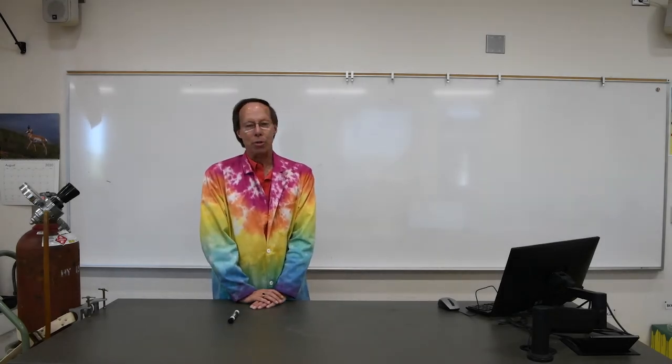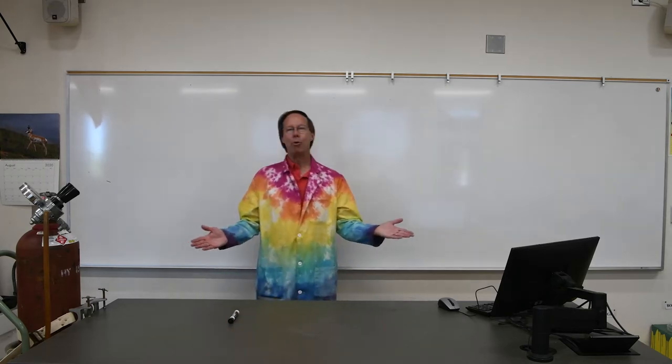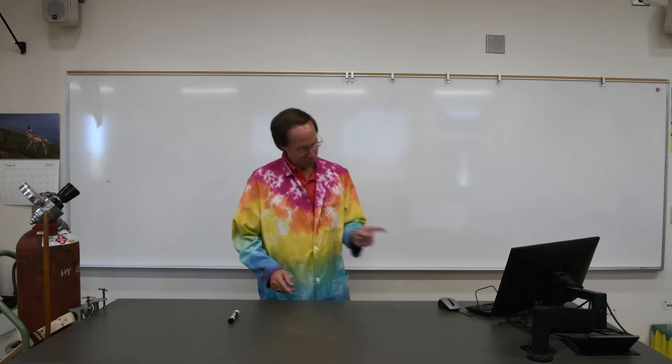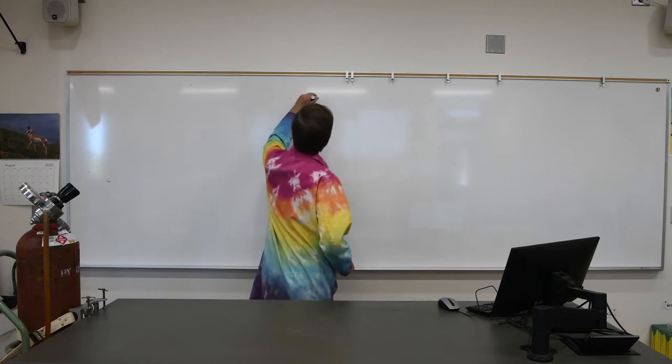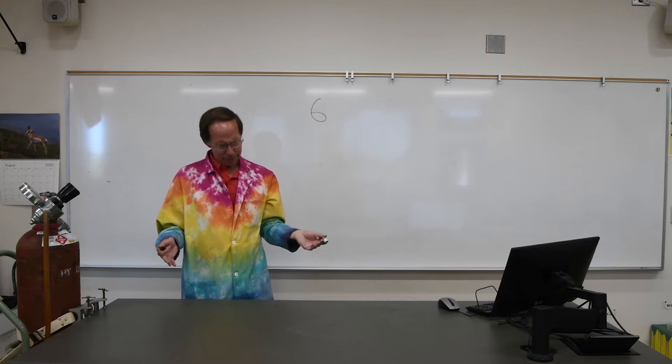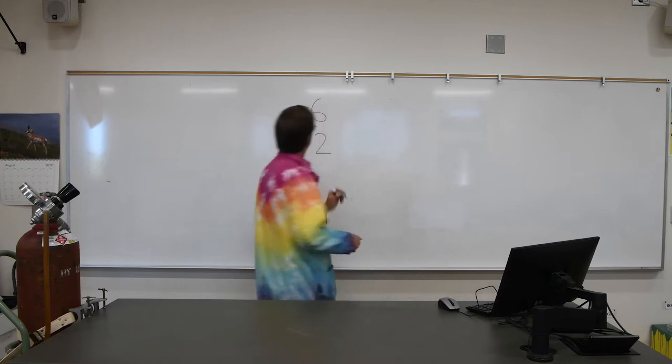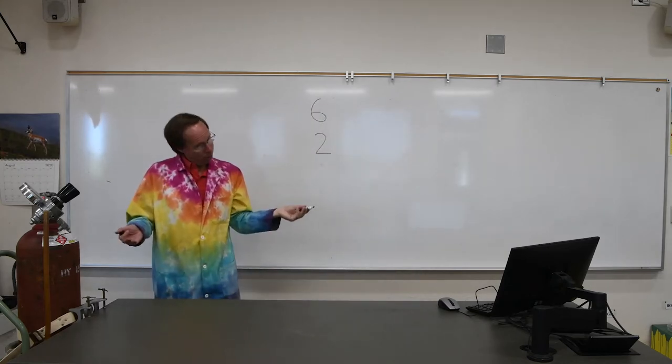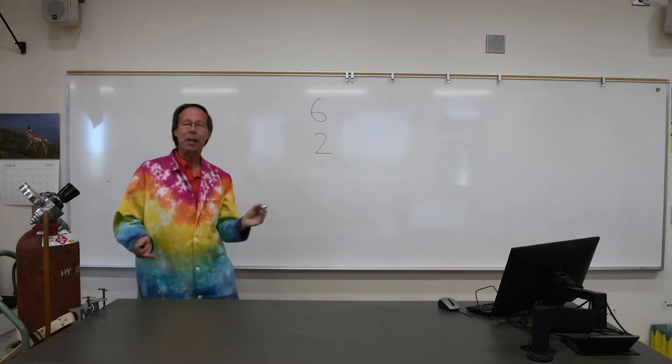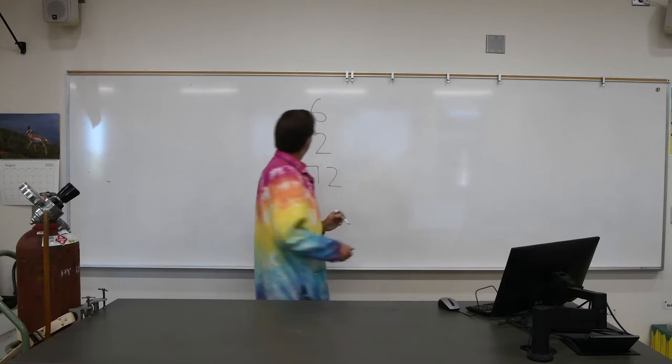In chapter one, we're going to be dealing a lot with measurements. So let's start out by measuring something. Let's use this table, for example. Looking at this table, I would say that the length of this table is six. Is it six? I look at it again, I'm thinking, no, maybe the length of the table is actually two. But no, one more time, I'm really thinking about it now, and it occurs to me that the table is actually 72.